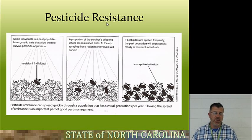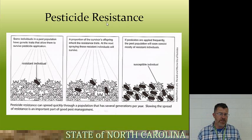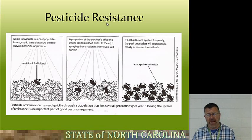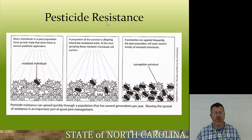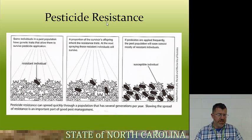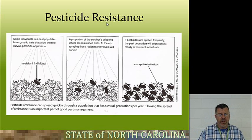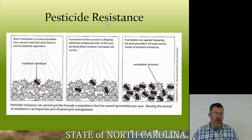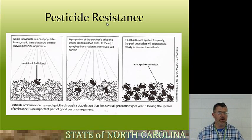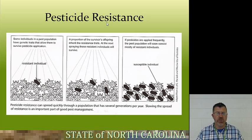Pesticide resistance: there are always a few individuals in a population that are automatically resistant to the pesticide. That individual is going to pass those traits to its offspring. Eventually, if pesticides are applied frequently enough, the pest population will consist mainly of resistant individuals. Resistance can spread quickly through a population of pests, especially ones with several generations per year. Slowing the spread of resistance is an important part of good pest management — don't use the same pesticide repeatedly. Implement everything within your IPM plan and see if you can avoid using that pesticide, so that when you do use it, the pest hasn't yet become resistant.